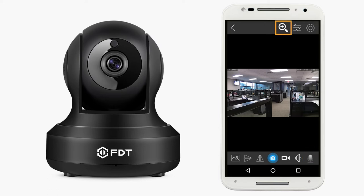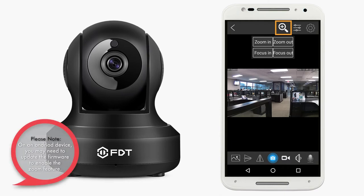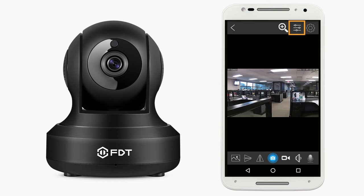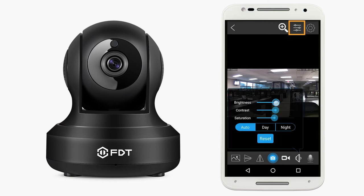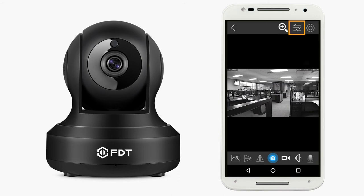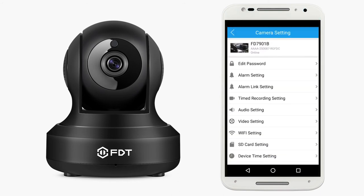On the top of the Live View screen, you will see a magnifying glass icon. This feature enables you to zoom in or out of videos as well as enhance its focus. The Image Setting icon enables you to adjust the image brightness, contrast, and saturation. You can also set the LED status to Auto, Day, or Night Mode. And finally, the Gear icon, which will return you back to the Camera Settings page.